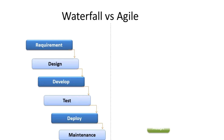Agile believes in small incremental releases so as to get early validation of the product and adapt the next steps accordingly. It starts with minimum planning and evolves the plan based on feedback received. Here, teams work in collaboration and are self-managed.